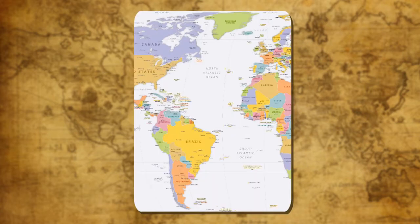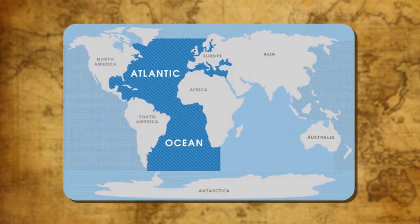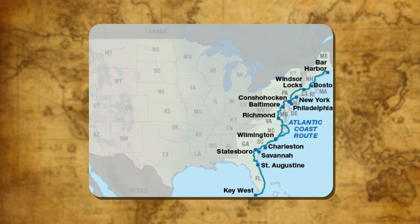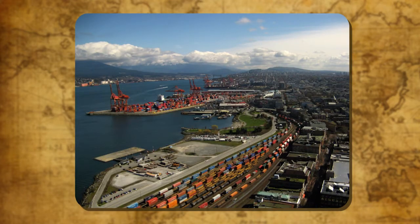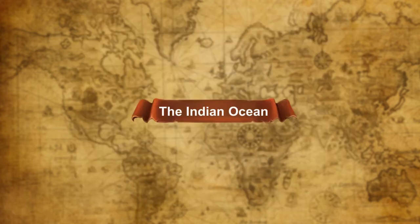The Atlantic Ocean is the second largest ocean in the world. It is shaped like the letter S. This ocean is bordered by Europe and Africa in the east and by North and South America on the west. The coastline of the Atlantic Ocean is highly indented. The irregular and indented coastline provides ideal locations for natural harbours and ports. It is the busiest ocean and has some of the largest harbours in the world.